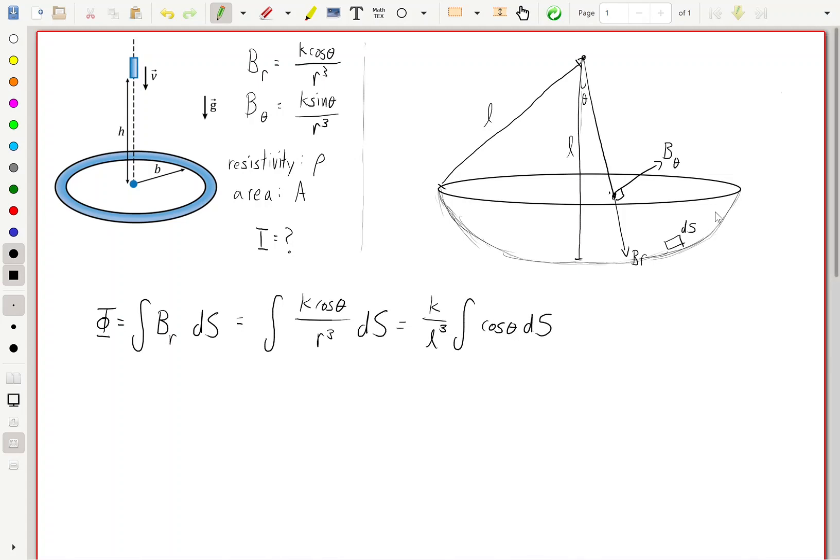Now, we can use one more trick here by relating the area of this cap to the area of this disk here. If we call that area ds prime, then we can make the relationship between ds prime and ds as ds prime equals cosine theta ds. And we can do this by noticing that this angle right here that is going to be given by theta. So essentially, we have k over l cubed of the integral of ds prime, which we know to be the area of the disk. And if the disk has a radius of b, that's going to be pi b squared.